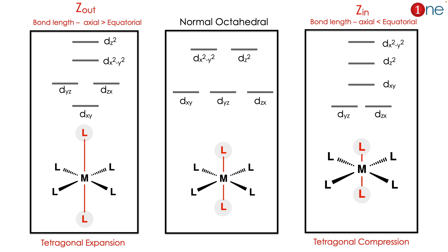The important fact: Z out means the z ligand going outside. It is called tetragonal expansion. In that case, axial bonds are longer than equatorial bonds. Similarly, in Z in, bond length of axial will be lesser than equatorial. This is called tetragonal compression because ligands are moving inside.